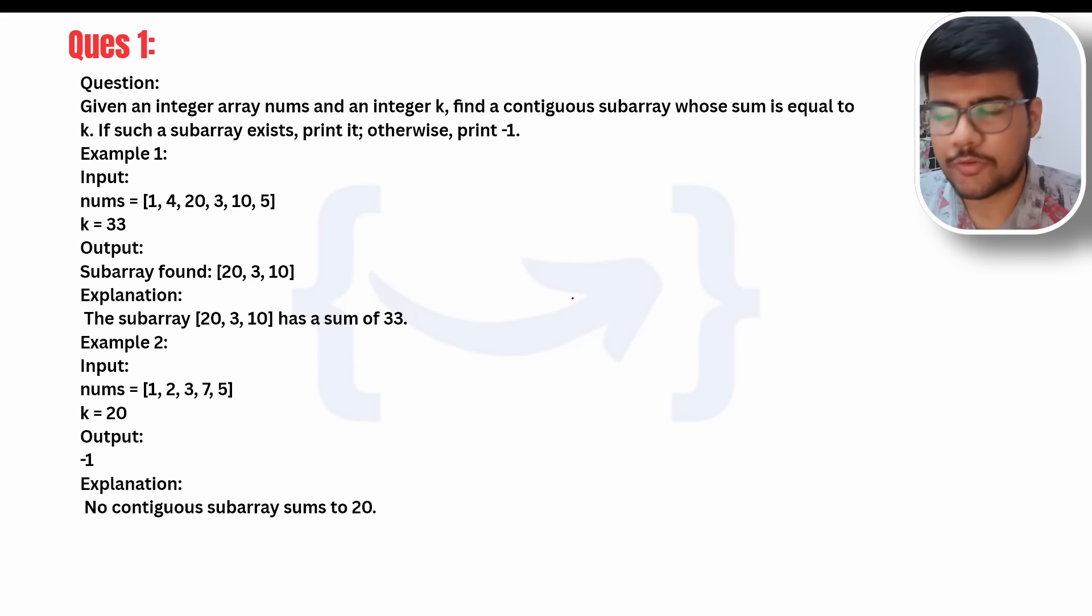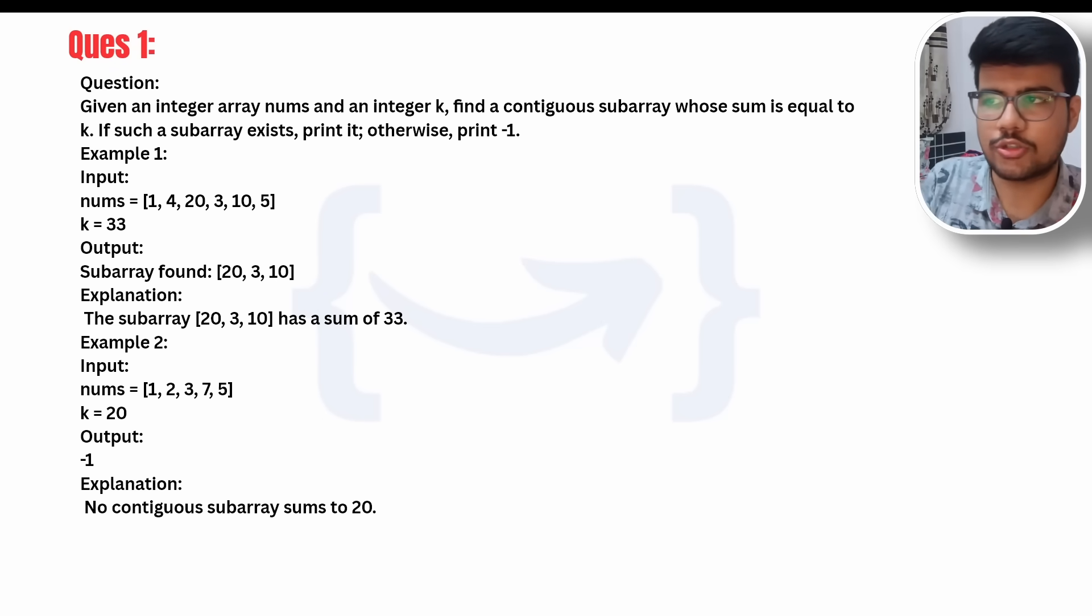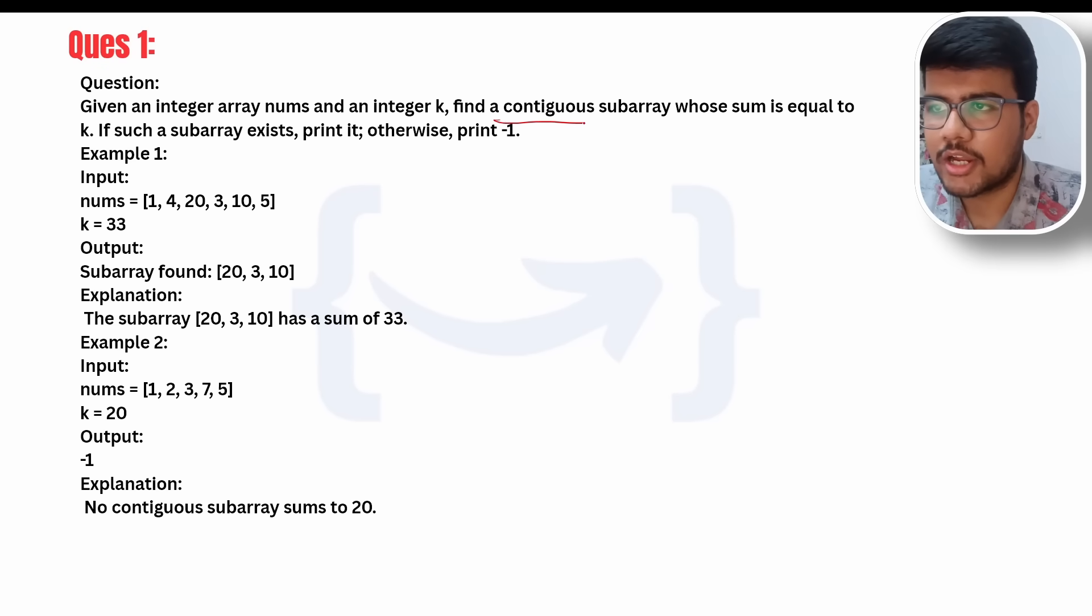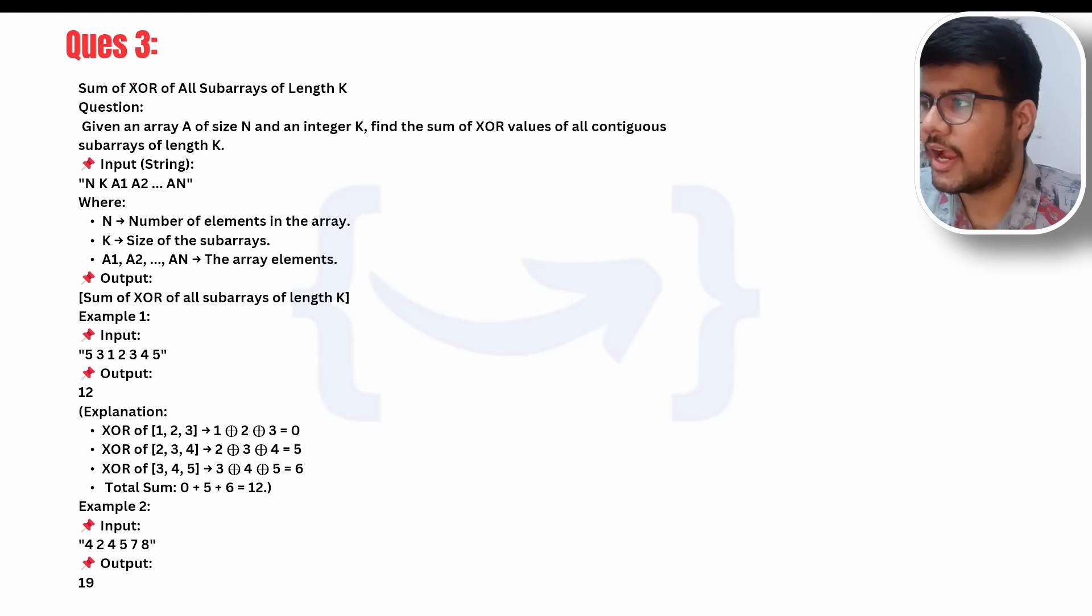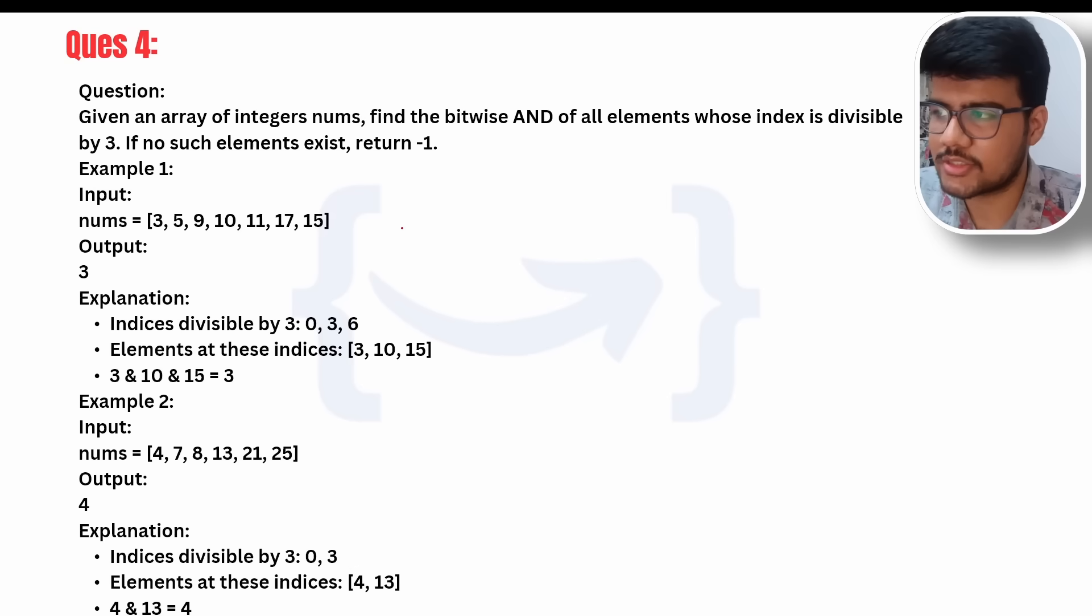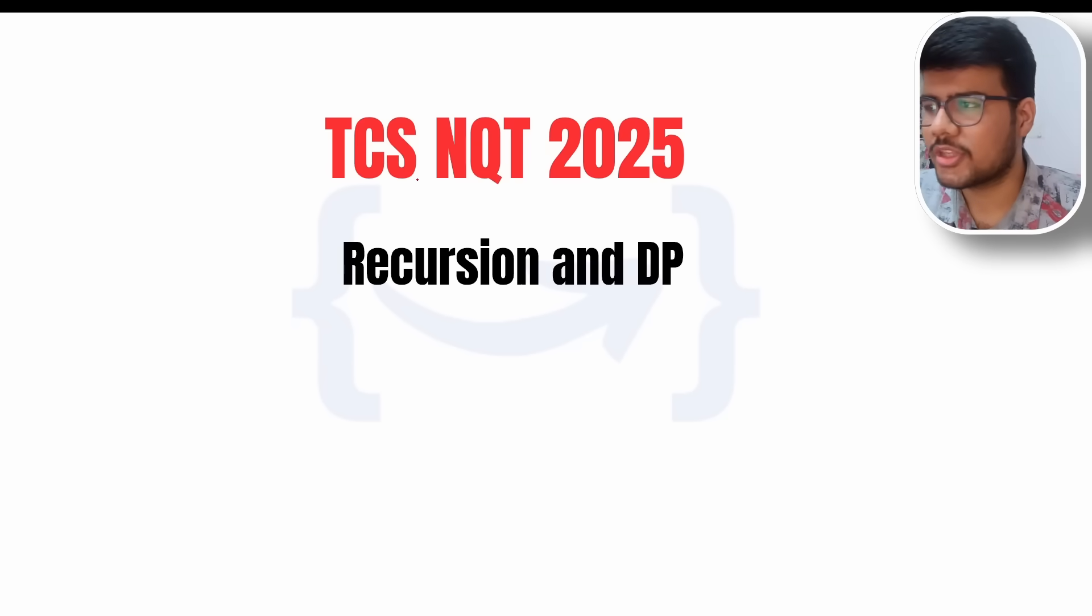TCS NQT 25 sub-array and bitwise questions are most important. I personally created those questions because here you should have a vibe—what do you mean by vibe? It should cover two questions in a single question or two methods in a single question. Here you need to find a continuous sub-array whose sum is equal to K, which is the second part. This kind of question we have tried to create. You can see longest without repeating characters and XOR of all sub-arrays of length K. If you are able to solve these questions in a single go, you are totally done.